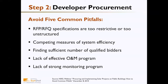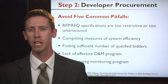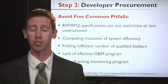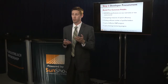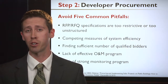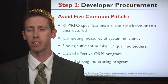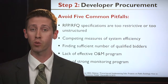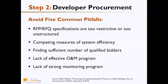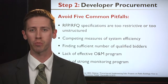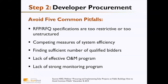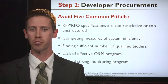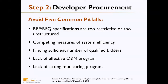There are five common pitfalls to avoid in developer procurement. First, the RFP or RFQ specifications may be too restrictive or too unstructured, failing to generate the appropriate number of bids or the level of detail needed to select the most qualified developer. Second, there can be competing measures of system efficiency, so request the appropriate system type for your application. Third, avoid limiting the number of qualified bidders by making restrictions too tight. Fourth, watch for a lack of effective operation and maintenance programs — the RFP or RFQ should establish an ongoing relationship where the developer provides O&M support throughout the project's life. Fifth, avoid a lack of strong monitoring programs; ensure there is a performance guarantee and ongoing monitoring, placing that burden on the developer rather than the municipality.